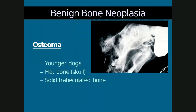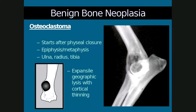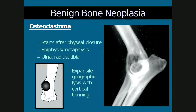There are several benign bone neoplasms that occur in dogs, though they are not very common. An osteoma occurs in younger dogs and mainly affects the skull. It appears as trabeculated bone rather than sunburst or thick periosteal bone, indicating it is not aggressive. An osteoclastoma or giant cell tumor occurs after physeal closure and affects the epiphysis and metaphysis, most commonly in the ulna, radius, and tibia. It consists of expansile geographic lysis with cortical thinning and no periosteal reaction — a very mildly aggressive lesion by radiographic principles.